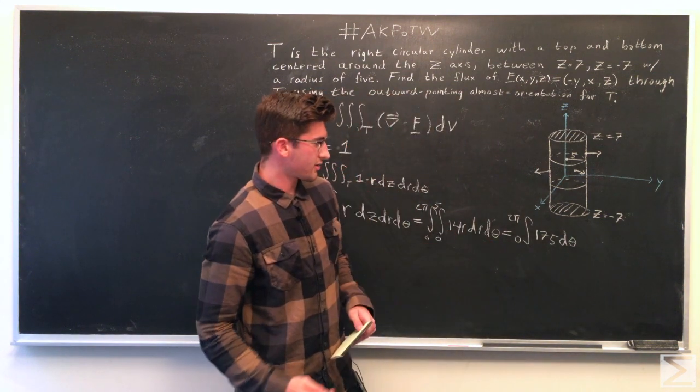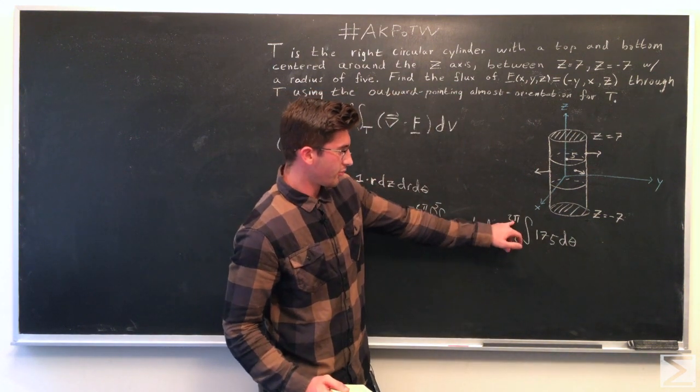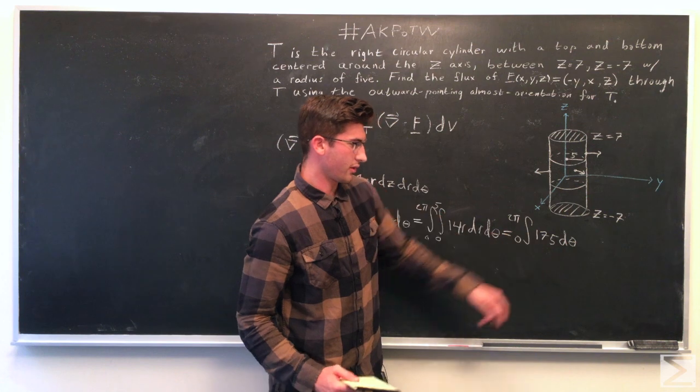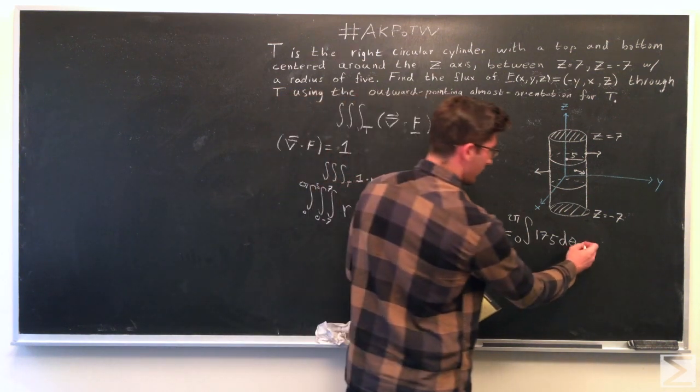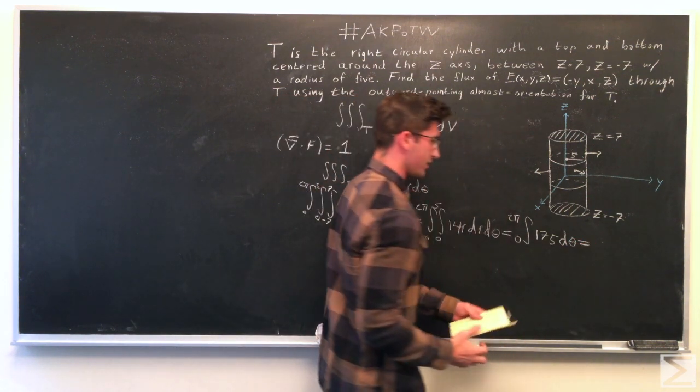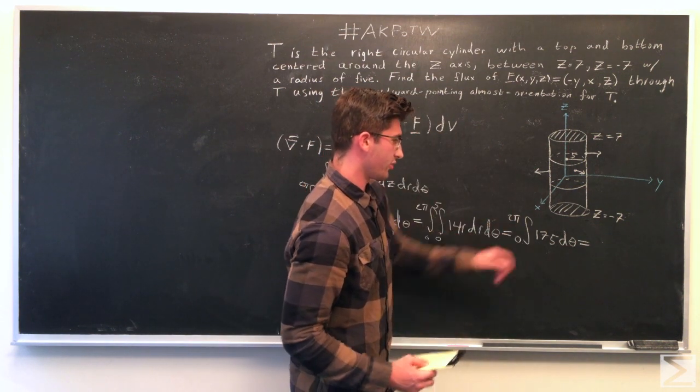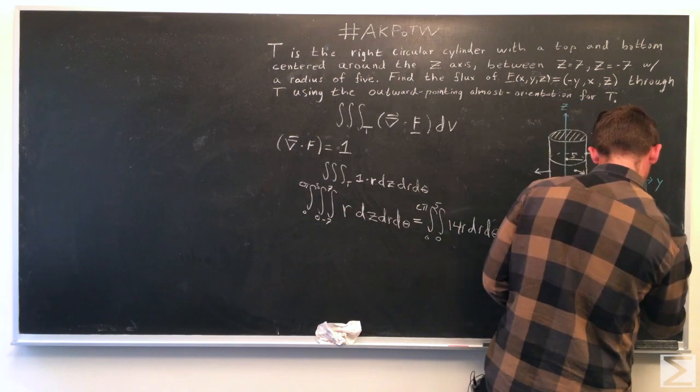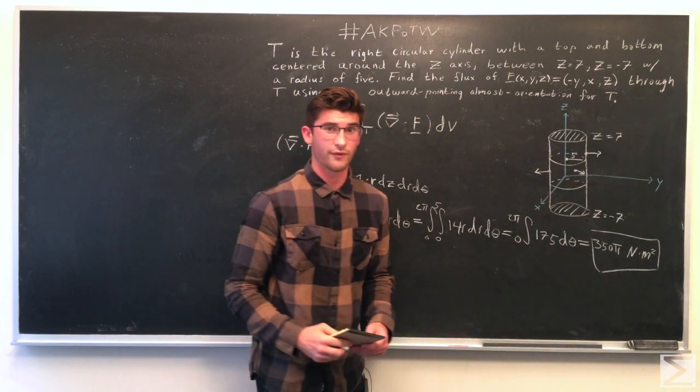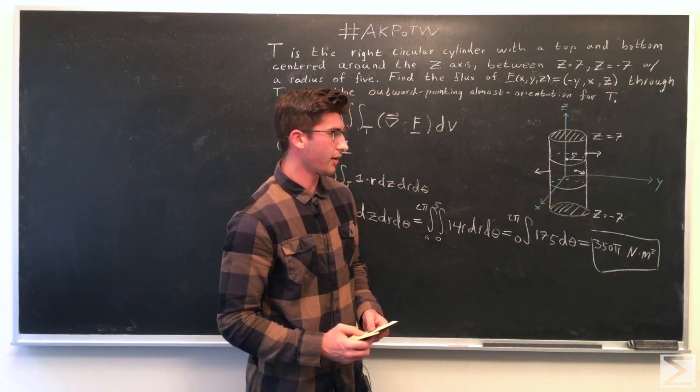So now we've got our last step from 0 to 2 pi of 175 d theta. And that's going to be really easy because this bottom part is 0. So you just have to multiply this by 2 pi. So we get a final answer of 350 pi newton meters squared.